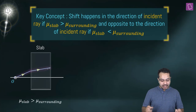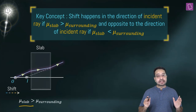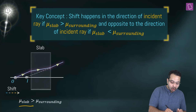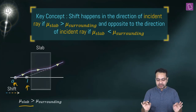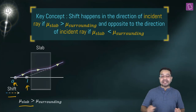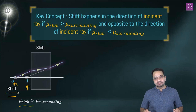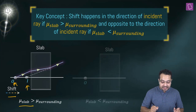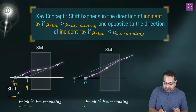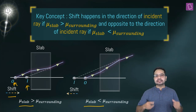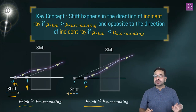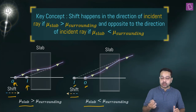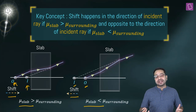When the refractive index of the slab is greater than that of the surrounding, the object is here and following the ray diagram, you can see that the image is formed shifted in the direction of the incident light. The opposite is also possible: if the refractive index of the slab is less than that of surrounding, the image shifts opposite to the direction of the incident light.